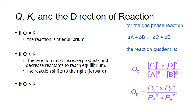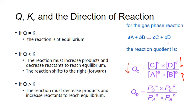If Q is greater than K, the reaction will proceed until Q decreases to equal K. For Q to get smaller, the numerator has to decrease and the denominator has to increase, meaning we decrease our products and increase our reactants. That means the reverse reaction will occur more quickly. Another way of saying this is that the reaction will shift to the left, in the reverse direction, until we reach equilibrium.